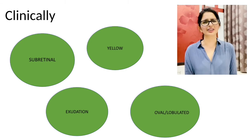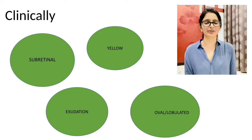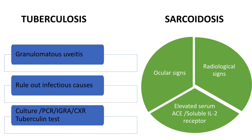It could be dull or intense, and in shape it can be oval or lobulated depending upon which pathology lies behind. Sometimes there could be a lot of subretinal fluid and even exudative retinal detachment in case the lesion is large. Once you have figured out what a choroidal granuloma is, let's differentiate whether it's a tuberculosis or a sarcoid one.